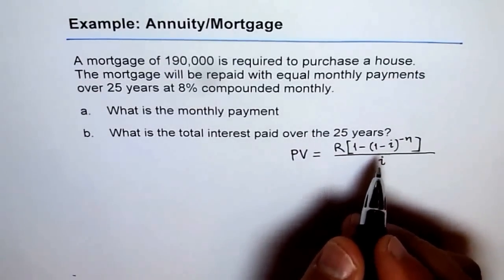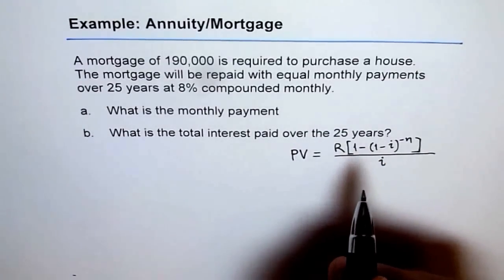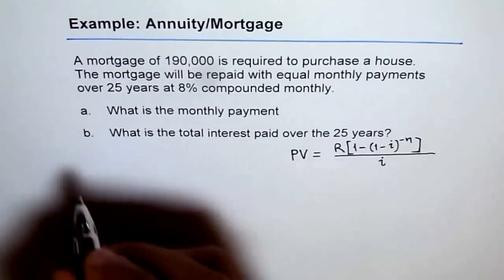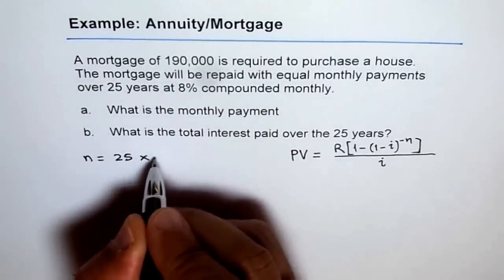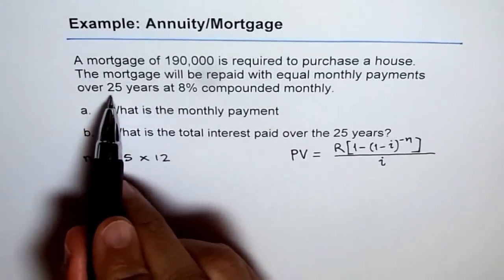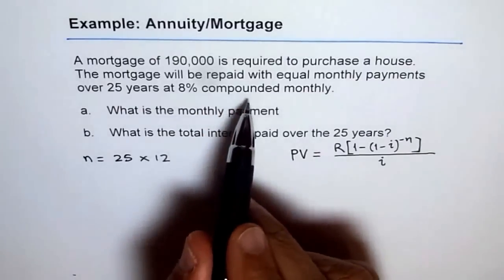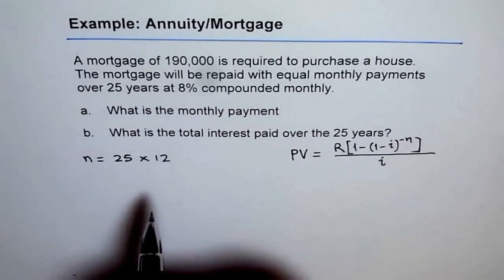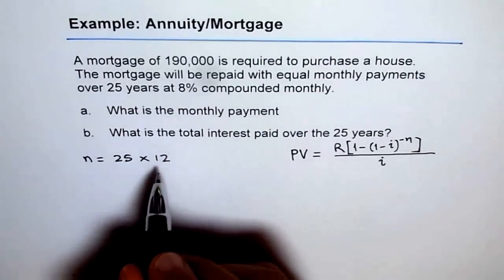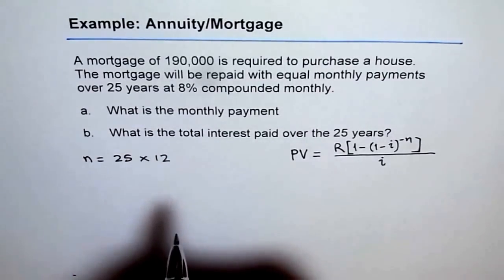In 25 years, how many payments will you make? That is the value of N. N is the number of periods or number of times you are making the payment. So we will write N equals 25 times 12, because it is for a period of 25 years compounded monthly. That gives me the value of N. If you multiply 25 times 12, you get the number of payments.